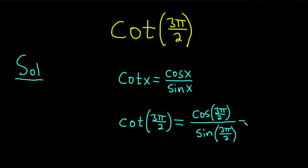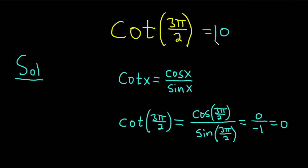The cosine of 3 pi over 2 is 0, and the sine of 3 pi over 2 is negative 1, so we get 0 over negative 1, which equals 0. So the cotangent of 3 pi over 2 is just 0.